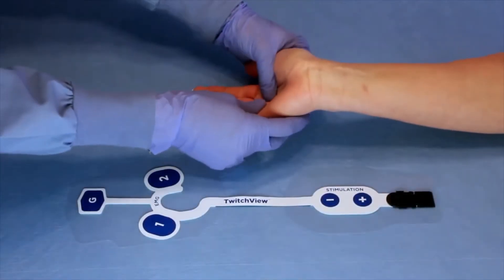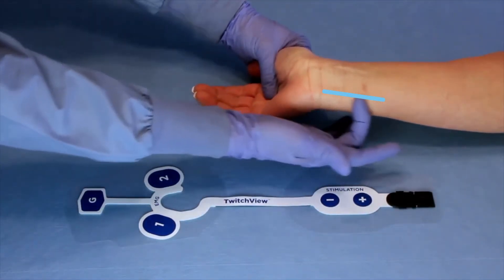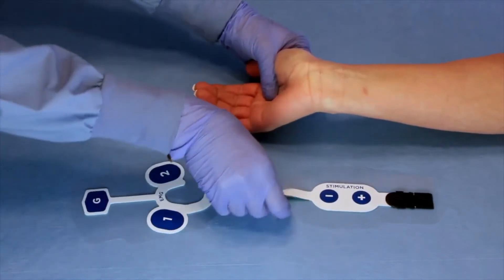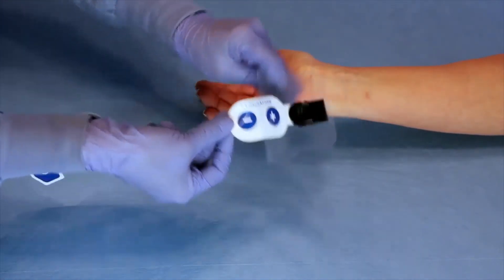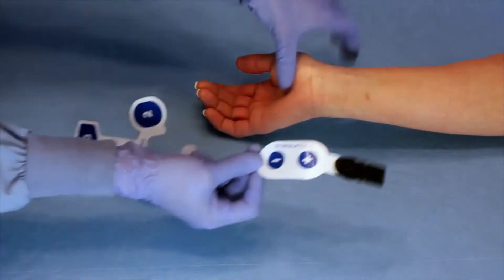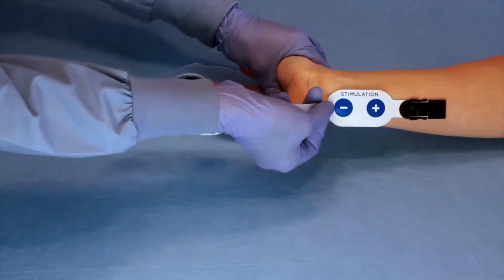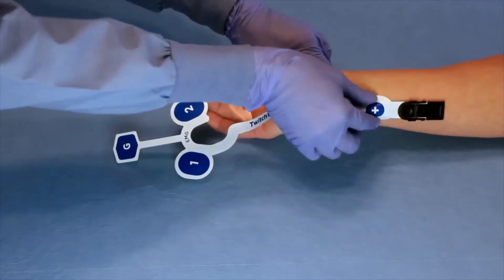To locate the ulnar nerve, extend the patient's wrist and the ulnar groove will become visible. Place the stimulating electrodes directly over the groove just proximal to the wrist crease.